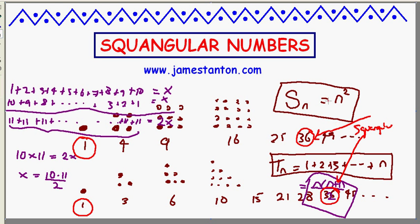So I'm going to call a number that's both square and triangular 'squangular.' One and 36 are the first two squangular numbers. I'd like you to pause this video and try to find the next squangular number. It's a bit of work, but you could do it. So here's a moment to pause.